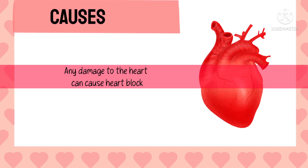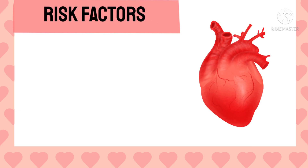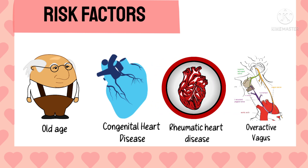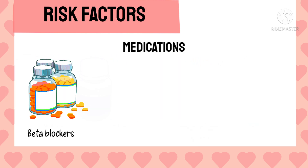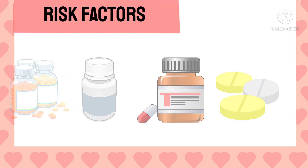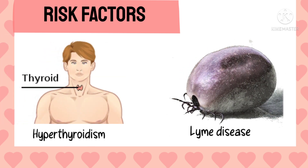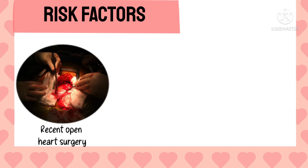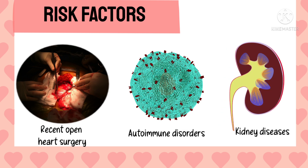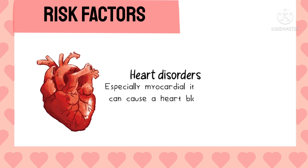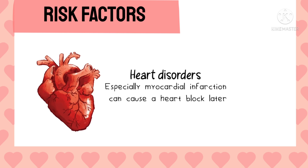Any damage to the heart due to any condition can cause a heart block, but there are certain risk factors commonly associated with it, like older age group, congenital heart disease, rheumatic heart disease, and an overactive vagus nerve. Medications like beta blockers, digoxin, sedatives, and antiarrhythmic drugs, hypokalemia and hypomagnesemia, hyperthyroidism, and Lyme disease are associated risk factors. Recent open heart surgery, autoimmune disorders, and kidney diseases are also commonly associated. Heart disorders, especially myocardial infarction, are said to be the most common cause of heart block at a later age.